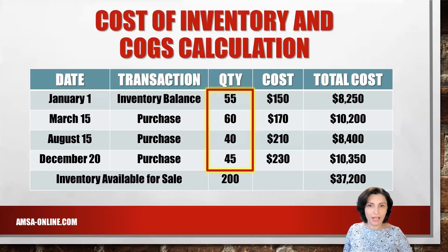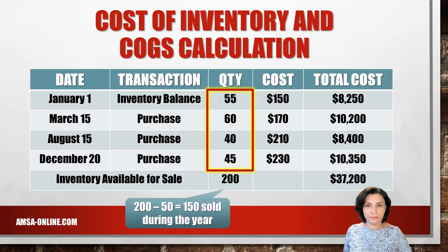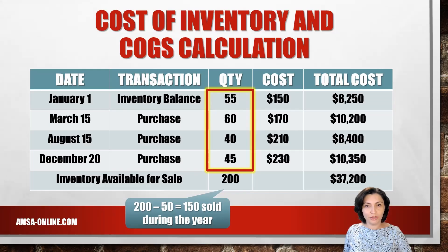Before we determine the inventory cost and cost of goods sold, let's calculate the total number of units available for sale. The units from beginning inventory plus total purchases are summed to find a total of 200 units available for sale. Of this amount, 50 units are in ending inventory, which means that 150 units must have been sold during the year.